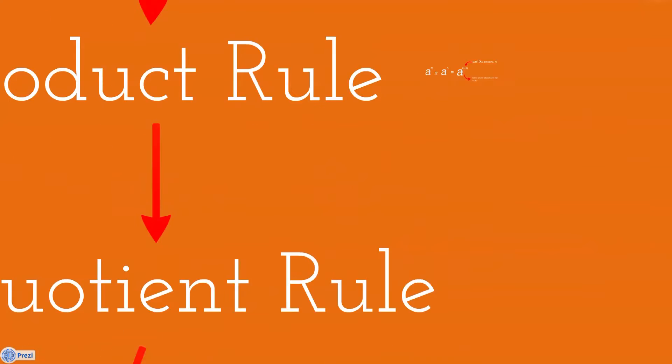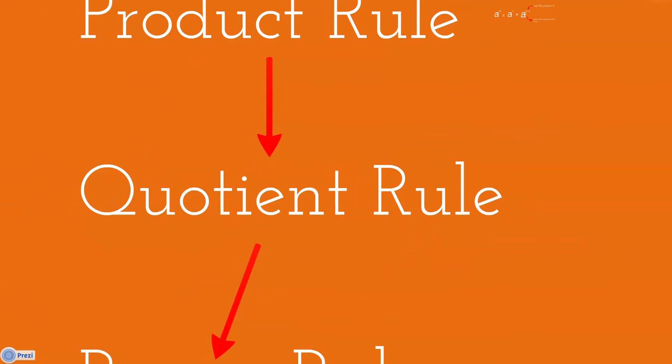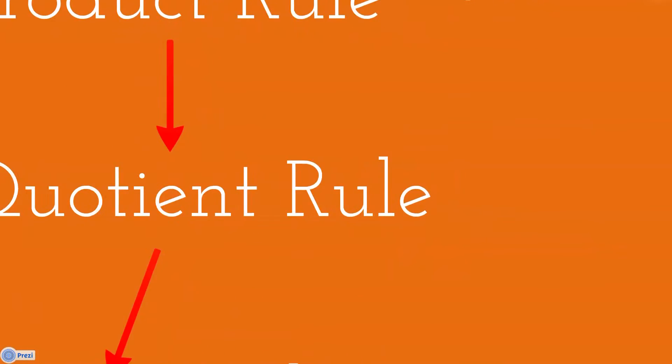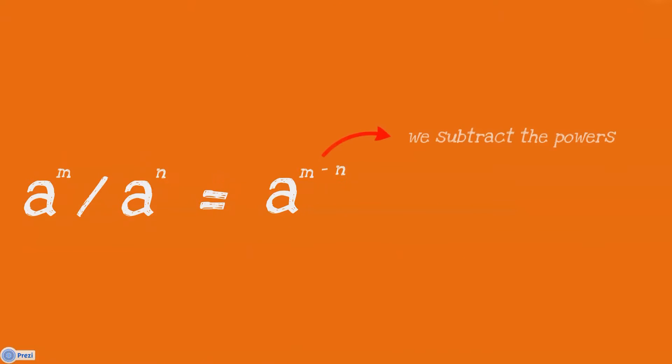Next, the quotient rule. Given a to the power m divided by a to the power n will equal a to the power m minus n. We subtract the powers. Remember, the bases must be the same.